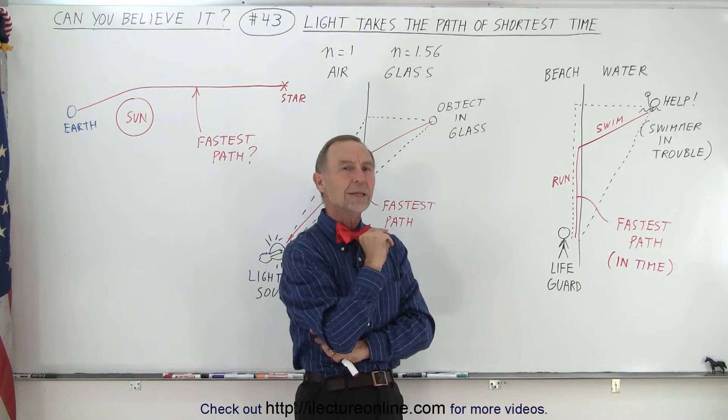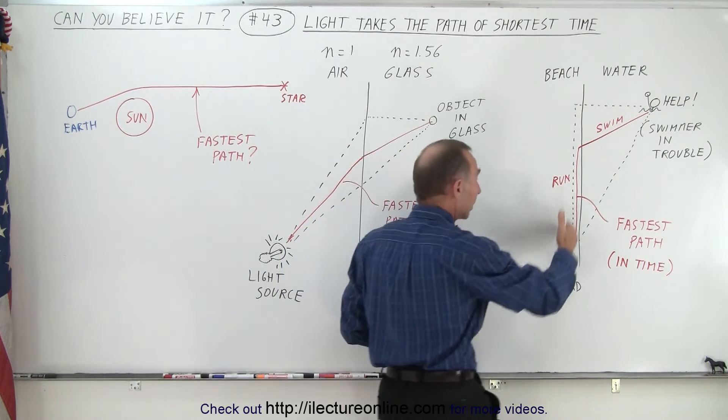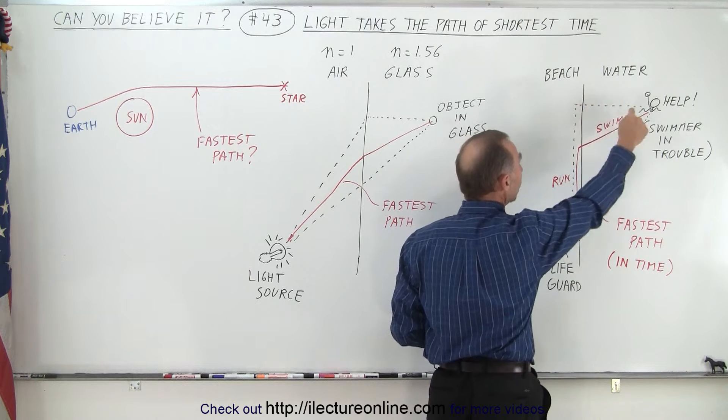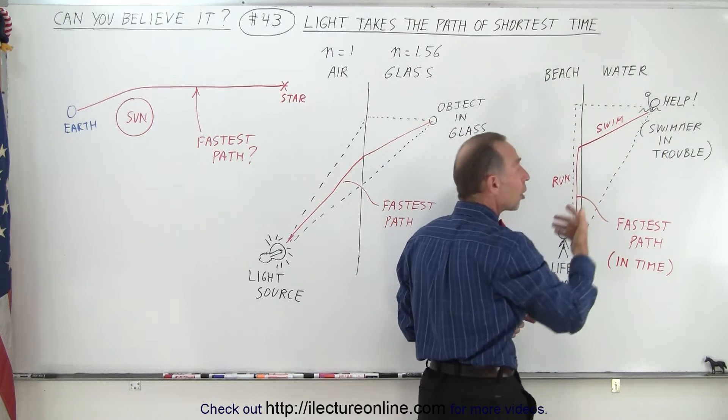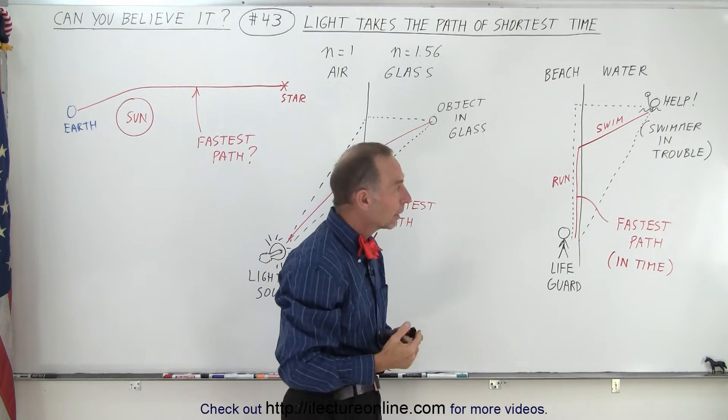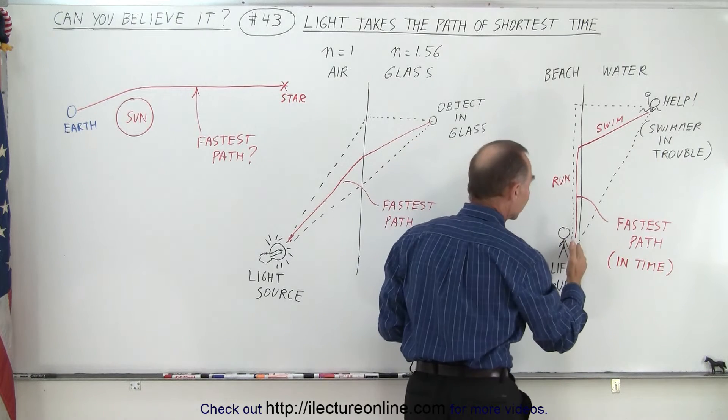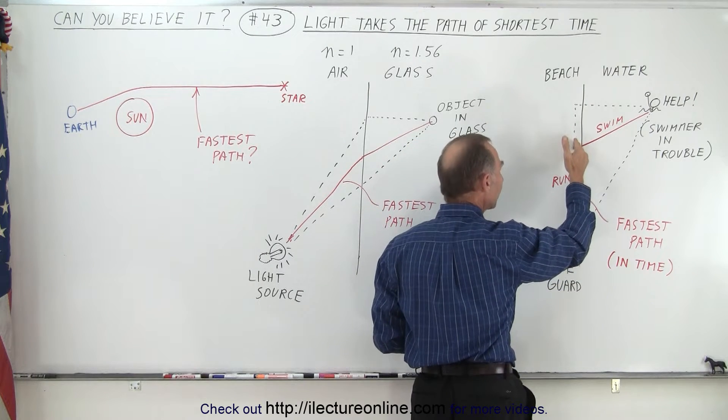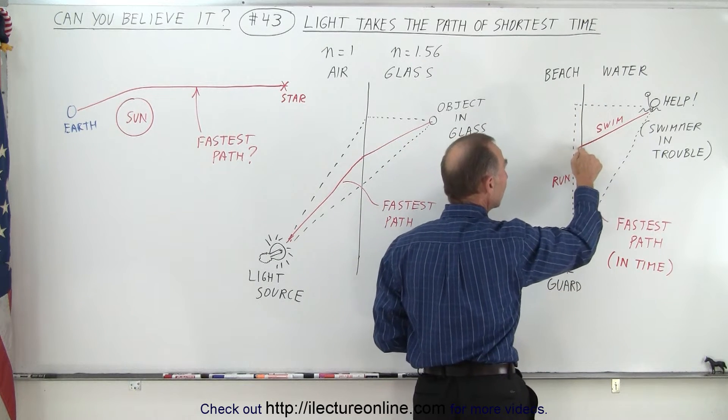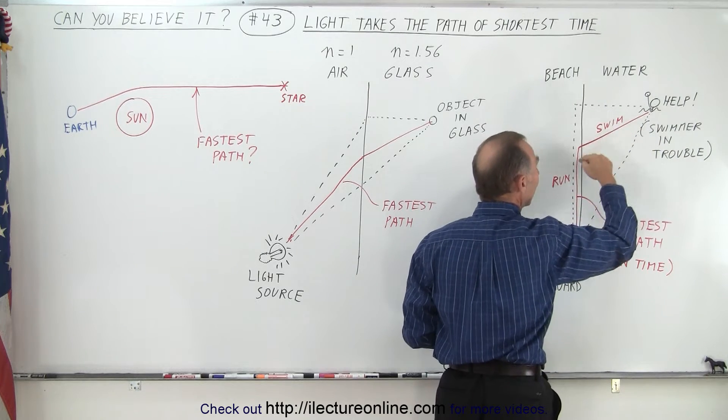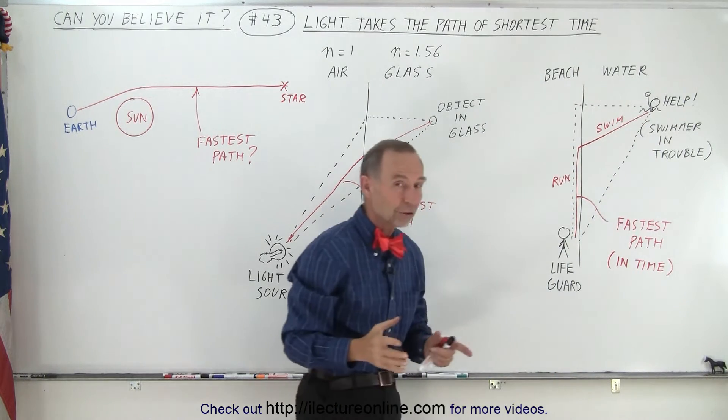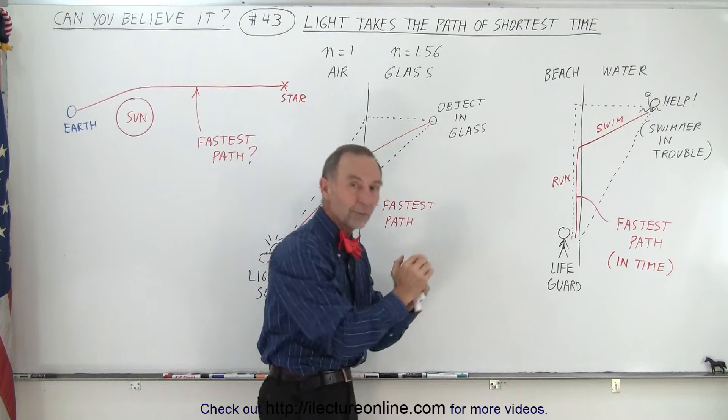But that's not the right thing to do either, because even though you can run a lot faster, this path is longer and actually takes longer time as well. The best thing to do is to run a certain distance, then stop before you get to this point right here, then jump in the water in this direction, and that will allow the lifeguard to reach the swimmer in the shortest amount of time.